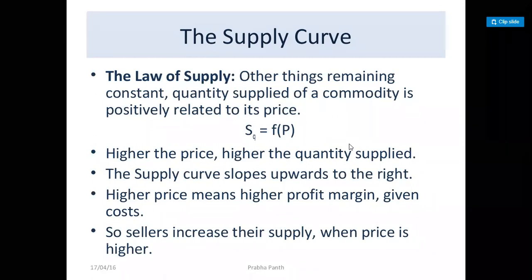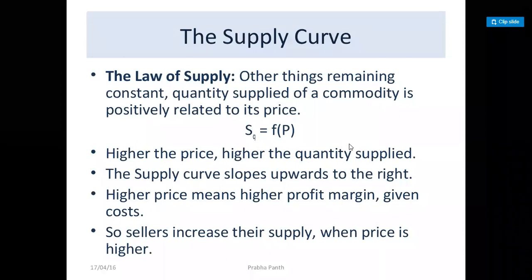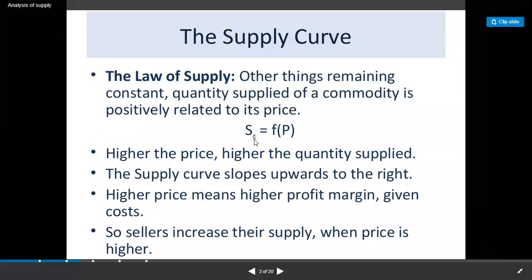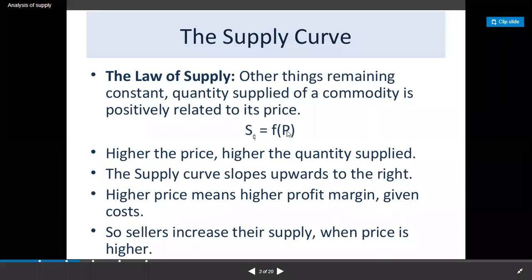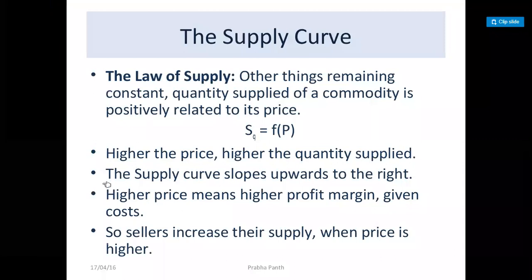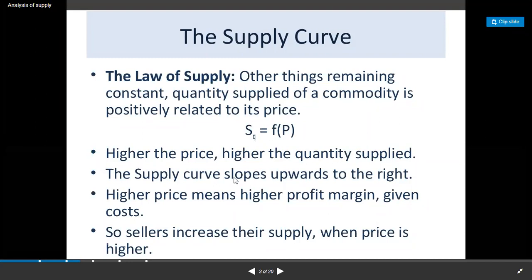In the law of supply, all other things remaining constant, the quantity supplied of a commodity is positively related to its price. Qs — quantity related to supply — is a function of the price of the particular product, and also a function of many other factors called determinants. Higher the price, higher the quantity supplied.